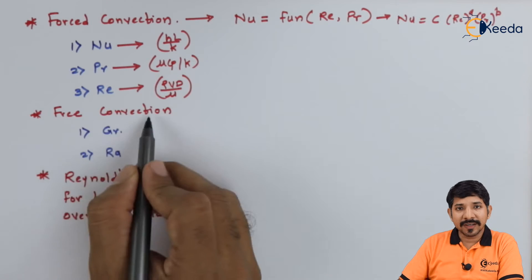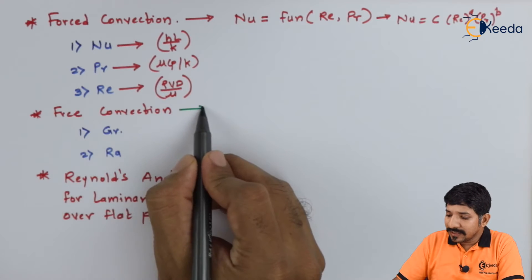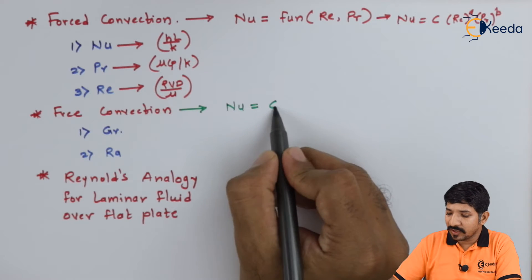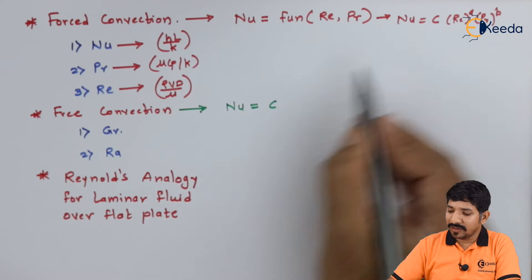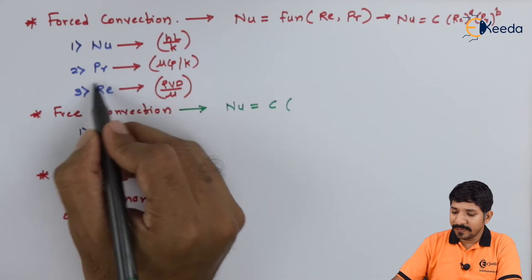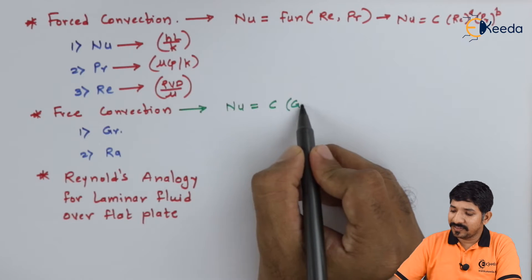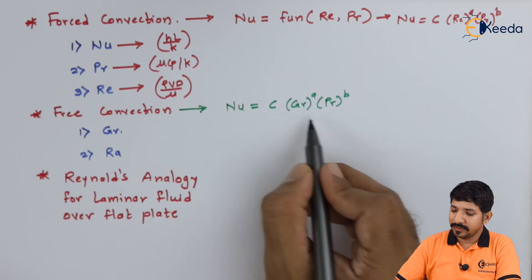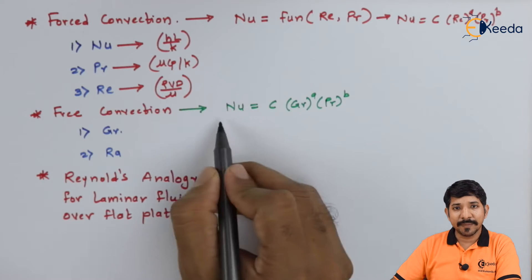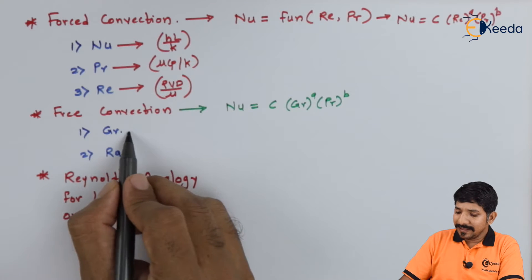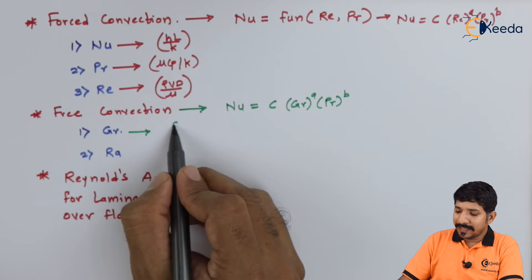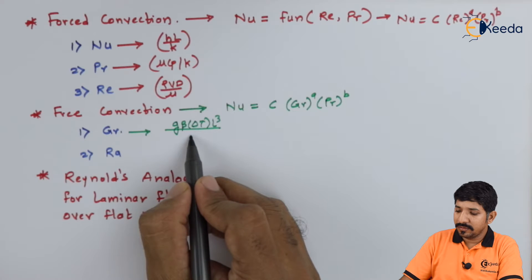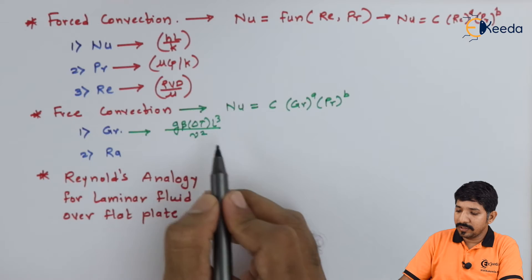For free convection, the Nusselt number is a function of the Grashof number instead of Reynolds number, written as Nu = C × Gr^A × Pr^B. The Grashof number is given by G×beta×deltaT×L³ / nu², where beta is the volumetric expansion coefficient. The Grashof number plays the same role in free convection as the Reynolds number does in forced convection.